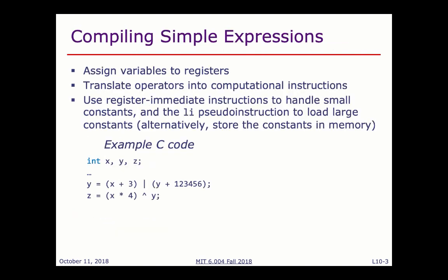Let's start with compiling simple code fragments. If you have some high-level C code where X, Y, and Z are 32-bit integer values with some expressions, to translate this to assembly you assign variables to different registers and then translate operations one by one. We don't have an instruction that does all operations at once, but we have instructions for most binary operations, so we translate them into individual RISC-V instructions.